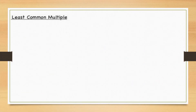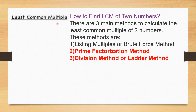The topic we are going to do is Least Common Multiple. You already know what a multiple is, so it will be easy to understand what a common multiple is — which we did in the previous class. So now, what is the Least Common Multiple? The LCM of given numbers is the smallest number which is divisible by each of the given numbers. There are basically three main methods to calculate the LCM: listing multiples or brute force method, prime factorization method, and division method or ladder method.